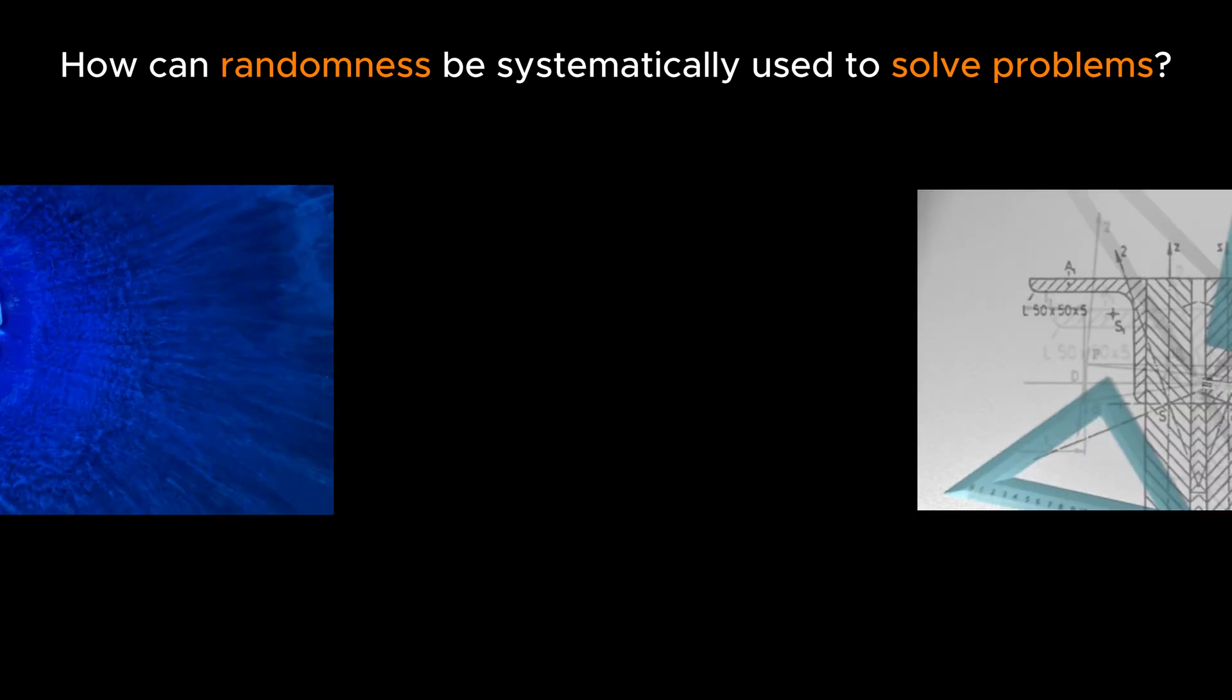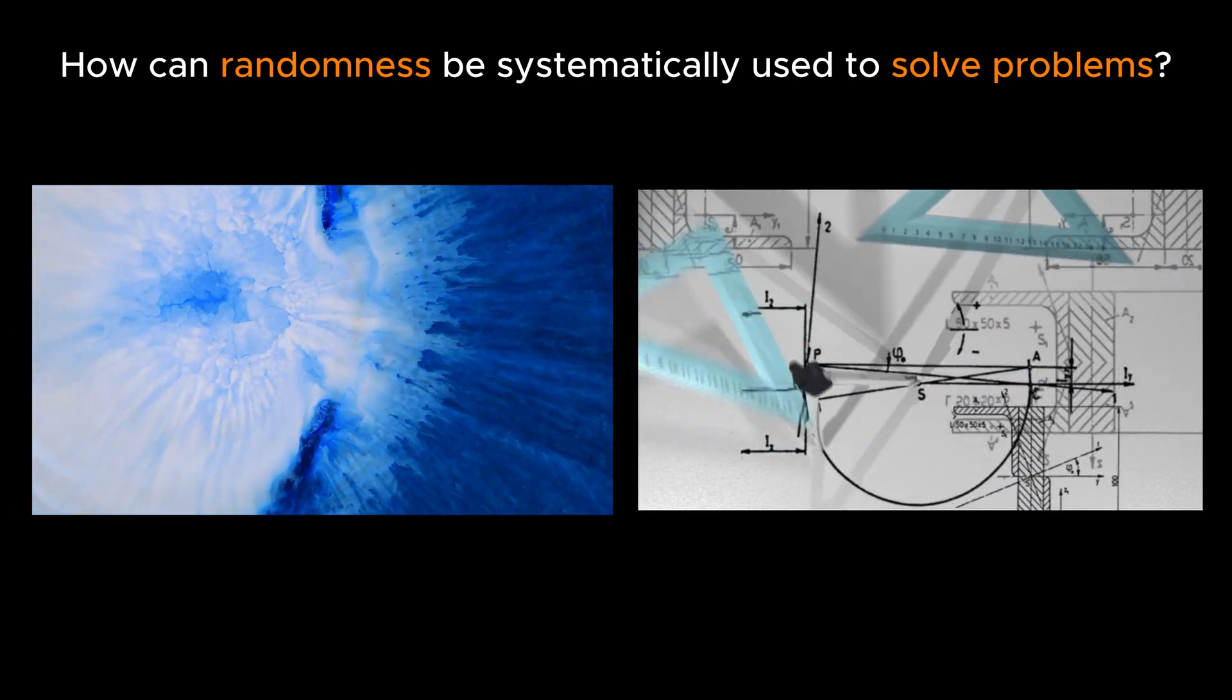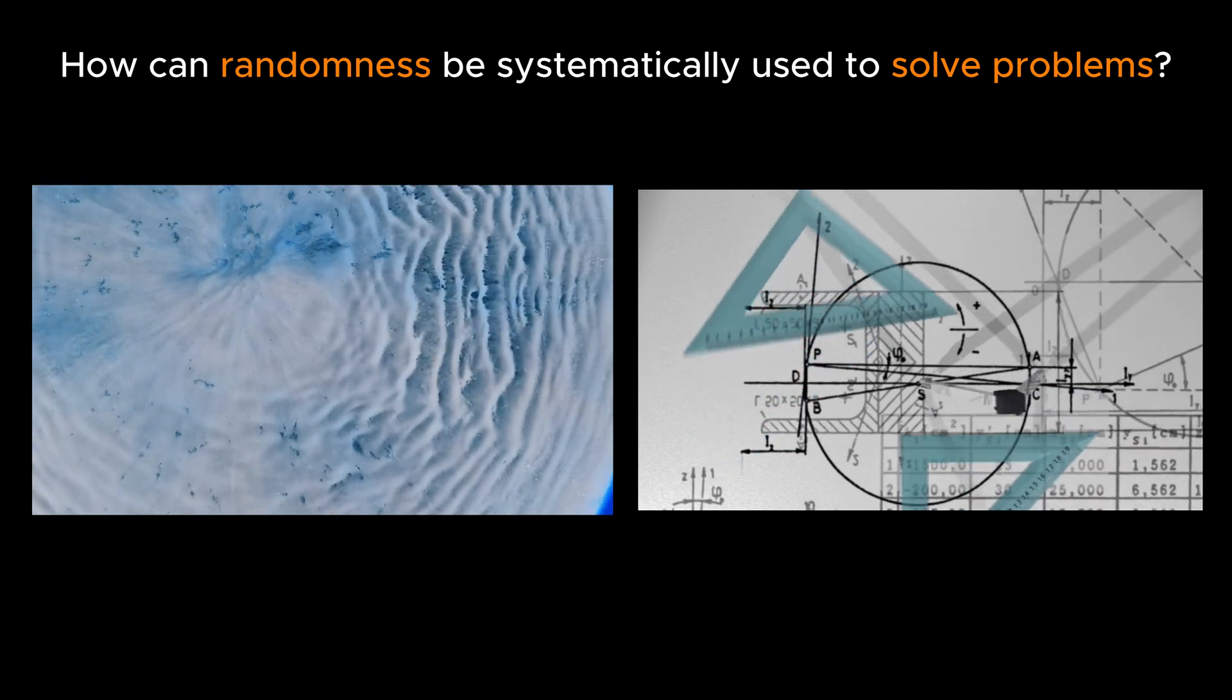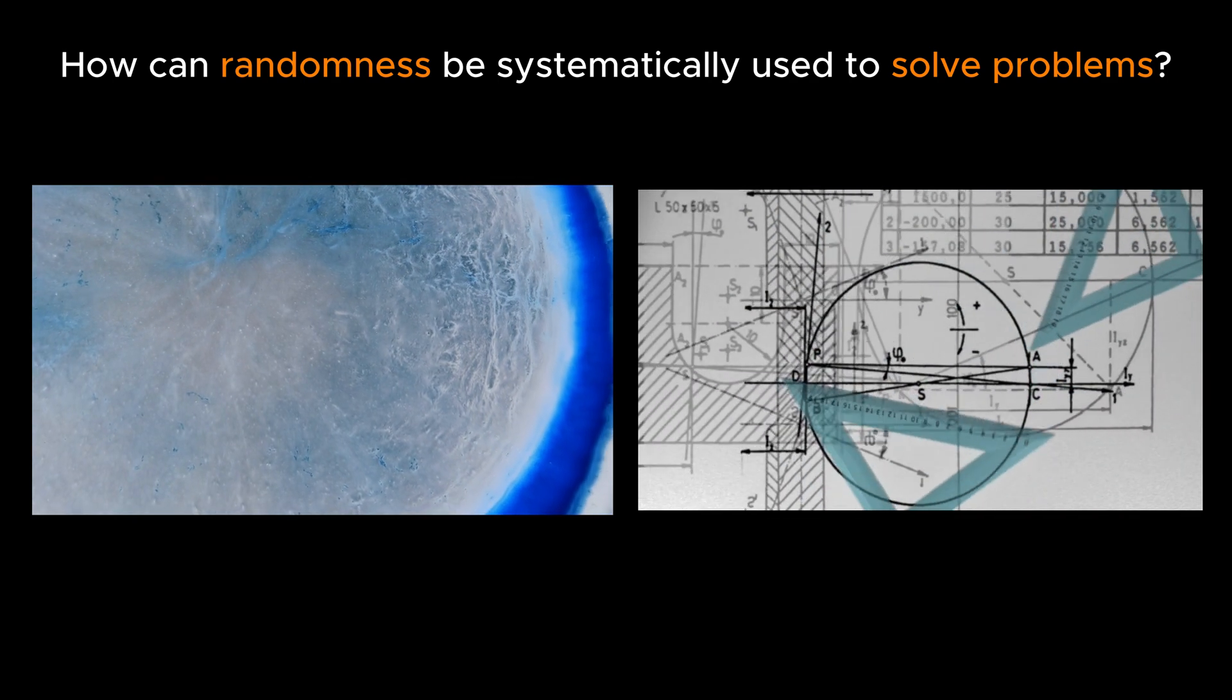The puzzling part is that randomness feels chaotic and unpredictable. Yet, the Monte Carlo Method uses it to produce precise and reliable results.